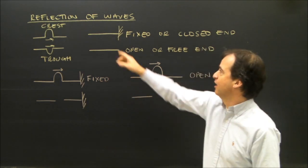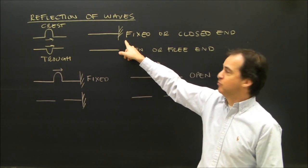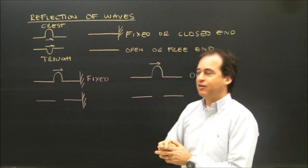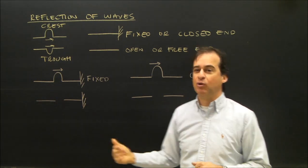There are two types of things a wave can hit. One's called a fixed end, and we draw it like this with these lines, as if I tied a rope or a spring to a wall and I sent a crest down and hit the wall. What would come back?